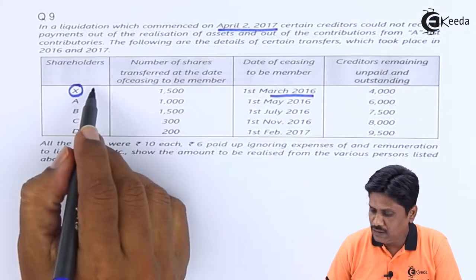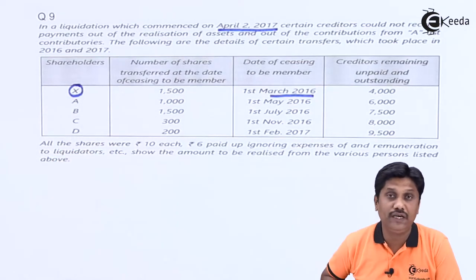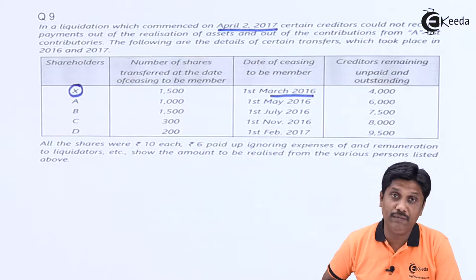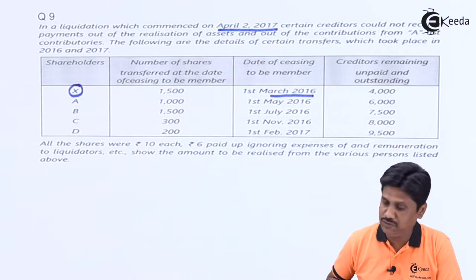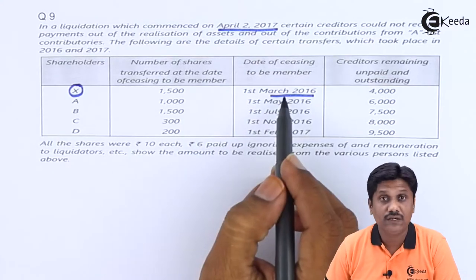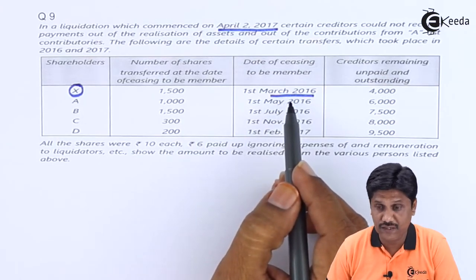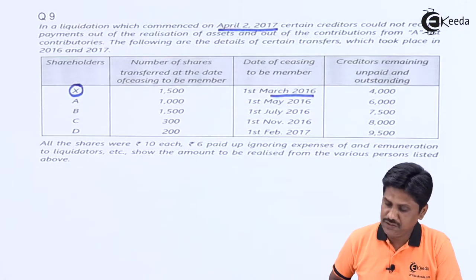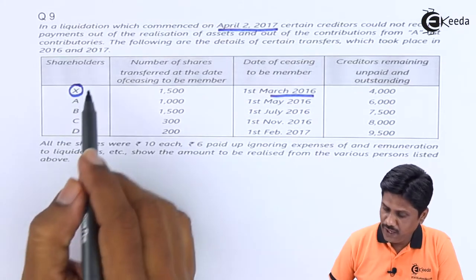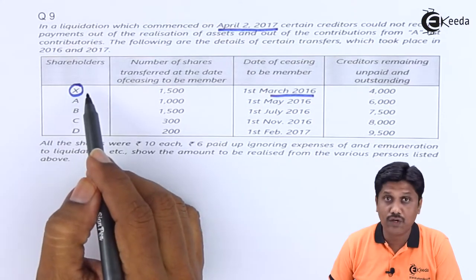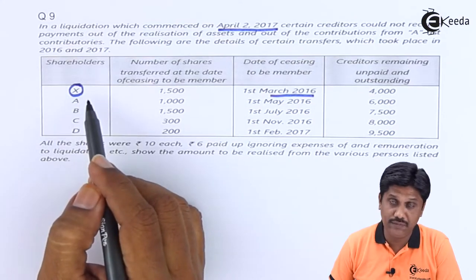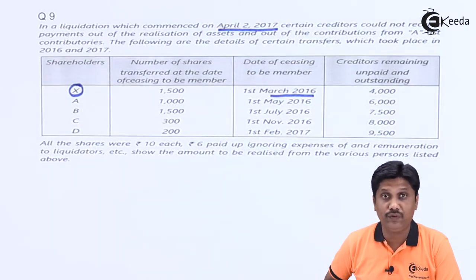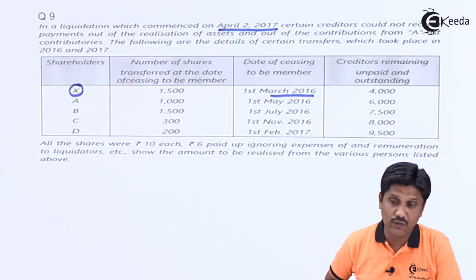He will not be counted because he transferred his shares earlier than the time limit. X does not meet the criteria for List B, so we cannot count X as a List B contributory. I will write a note for you explaining this.